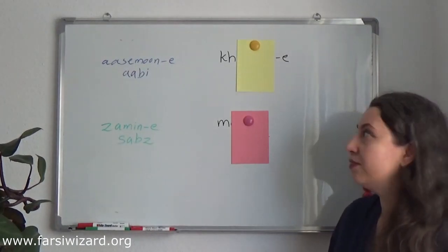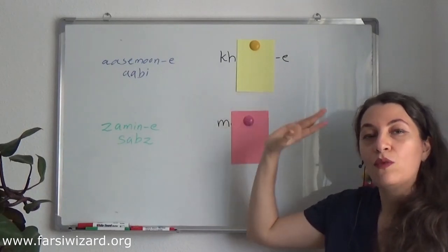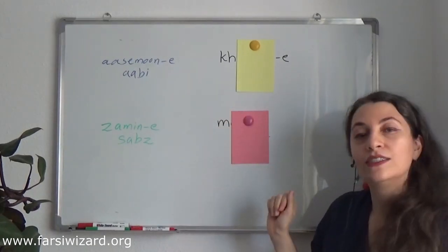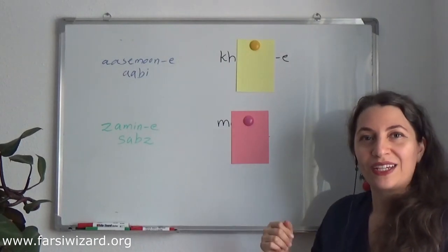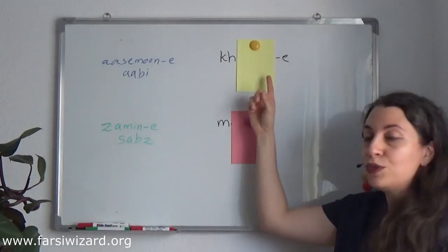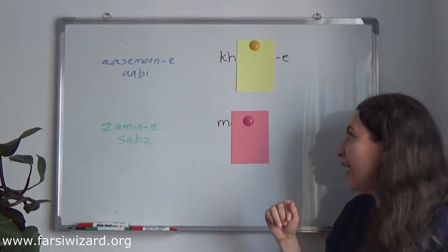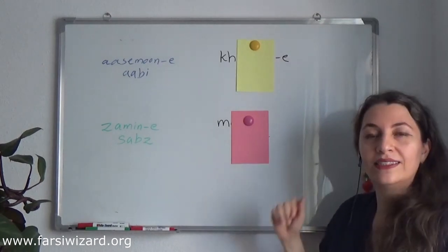Now with these two I'm not going to reveal. These two I want you to please leave your answers in the comment section below and I will get back to you. Let's see if you can guess how to say yellow sun and how to say white moon.